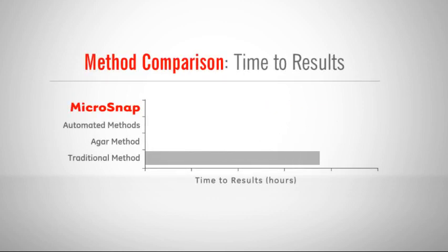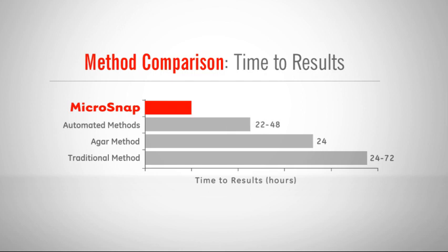This graph compares the time to results of low-level EB detection methods. On average, Microsnap reduces results twice as fast as other available methods. By speeding up time to results, you can reduce potential risk by reacting to contamination and taking immediate corrective action for future production runs, ensuring your customer always gets the best quality product.